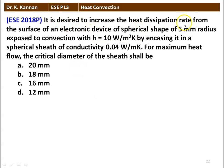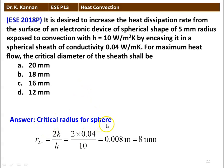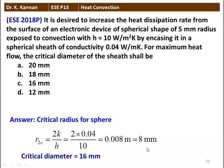It is desired to increase the heat dissipation rate from an electronic device of spherical shape of 5 mm radius exposed to convection with H = 10 W/m²K, by encasing it in a spherical sheath of conductivity 0.04 W/m·K. For maximum heat flow, the critical diameter of the sheath shall be (A) 20 mm, (B) 18 mm, (C) 16 mm, or (D) 12 mm. The critical radius R_c = 2K/H = 2 × 0.04 / 10 = 0.008 m = 8 mm, so the critical diameter = 16 mm. The answer is 16 mm.